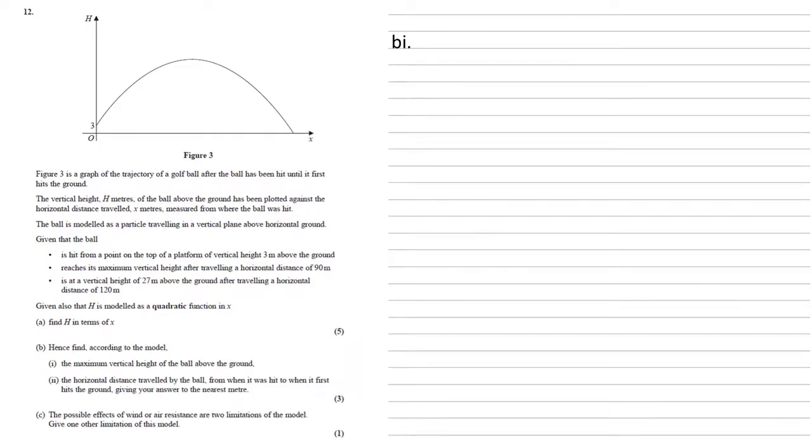Hence find, according to the model, the maximum vertical height of the ball above the ground. So we're told earlier that the maximum vertical height is when we've got a horizontal distance of 90 meters. So, x equals 90, we're going to put that into our quadratic equation. So h equals minus 1 over 300 times 90 squared plus 3 fifths times 90 plus 3 equals 30 meters.